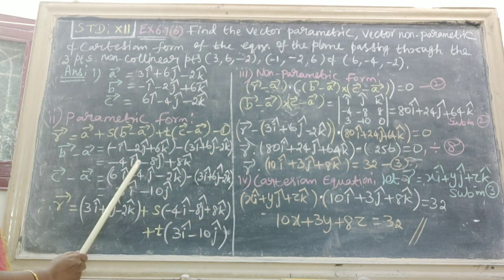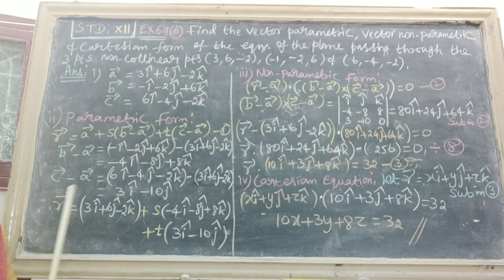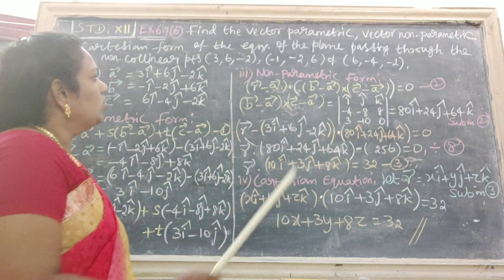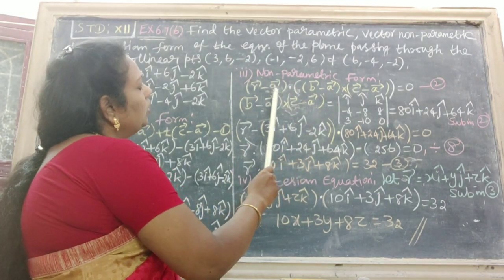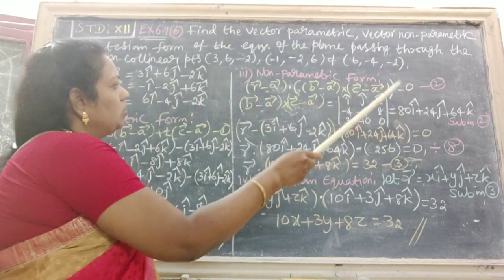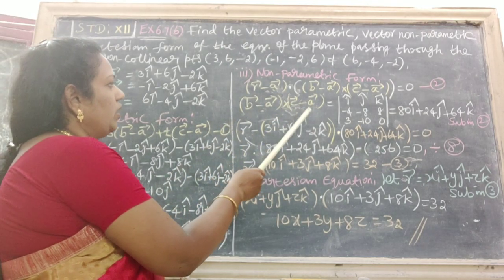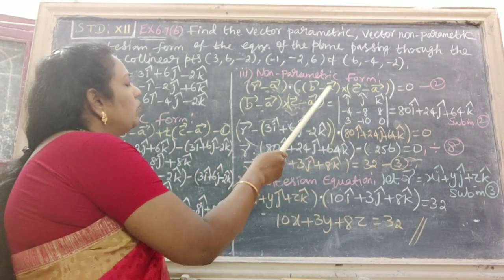Then substitute these in equation number 1. Then we get the parametric form. Next one is non-parametric form. Write down the type 3 form. That is equation number 2. To find B vector minus A vector cross C vector minus A vector, determinant form.